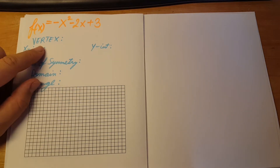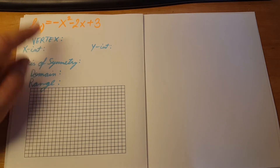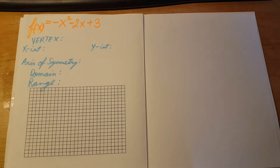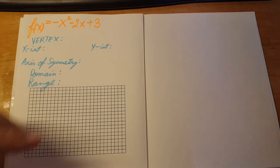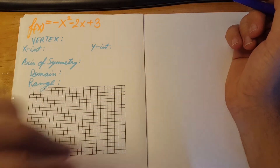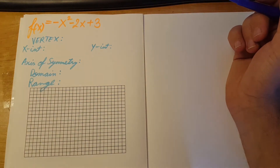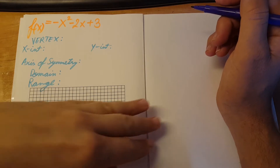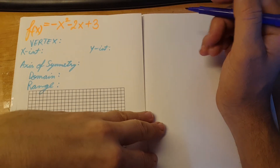Let's find the vertex. As we can see, this function is not in vertex form, so it's not easy to figure out its vertex. So why don't we put it in vertex form, and therefore we're going to see its vertex much easier.